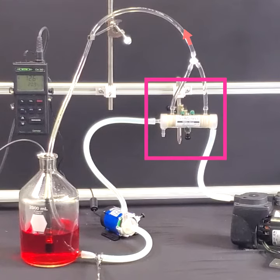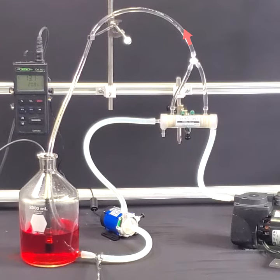We are using a PermSelect PDMS-XA-2500 gas exchanger with one quarter square meter membrane area to oxygenate the water. The oxygenated water is then returned to the bottle. Air flows in one port of the lumen side of the gas exchanger and vents out the other port.